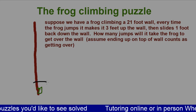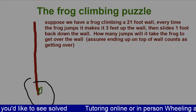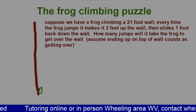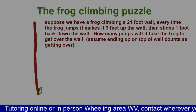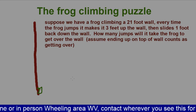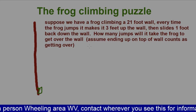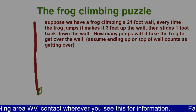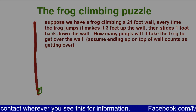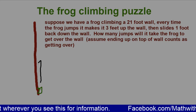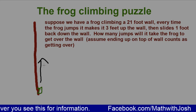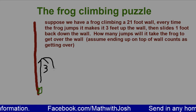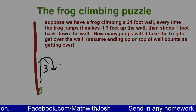As you see, we have a badly drawn frog on a badly drawn wall. Suppose we have a frog that is climbing a 21-foot tall wall. Every time the frog jumps, it goes up the wall three feet, then slides one foot back down the wall.